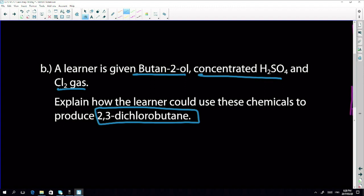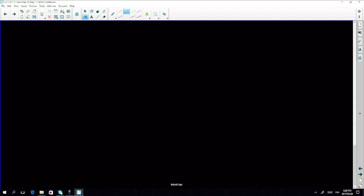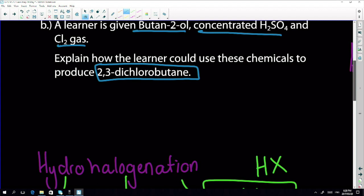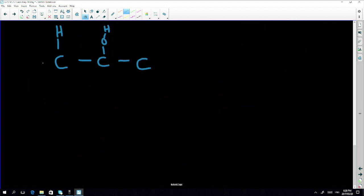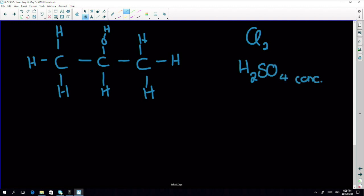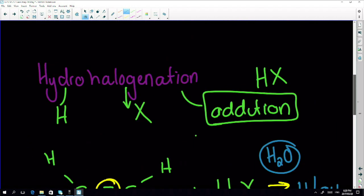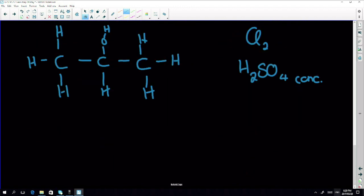So let's do this step by step. This is such a nice question. So they said to us we were given butan-2-ol. So if we draw butan-2-ol, butan-2-ol means that the OH is on that one. So there we go. It's easier if it's drawn. Then they told us we were given Cl2 and we were given H2SO4 which was concentrated.